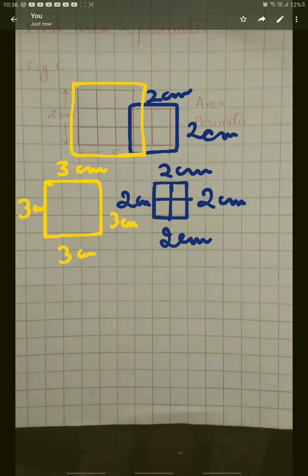For finding the area, first I am going to find the area of this yellow square. The formula for finding the area of a square is side into side, so 3 into 3 equals 9 centimeter square.